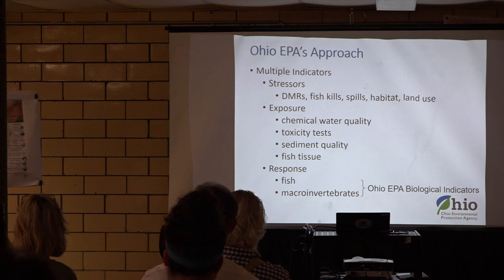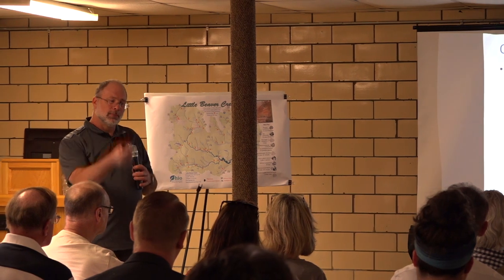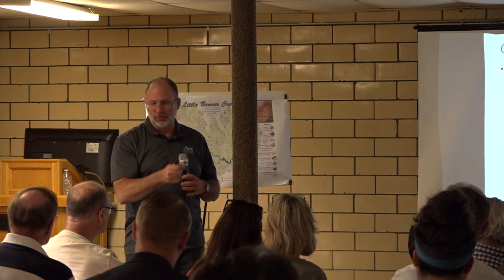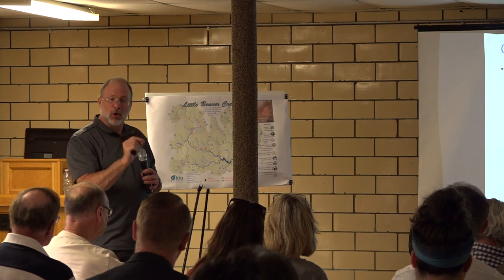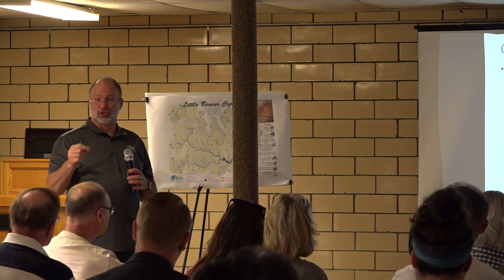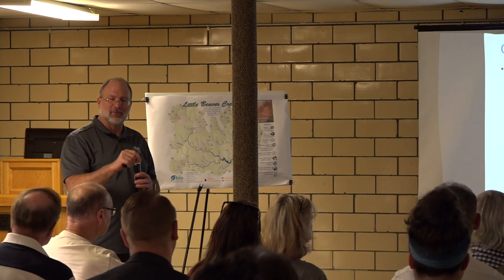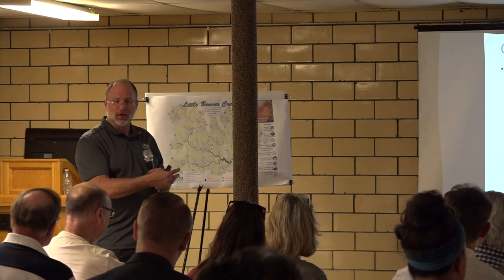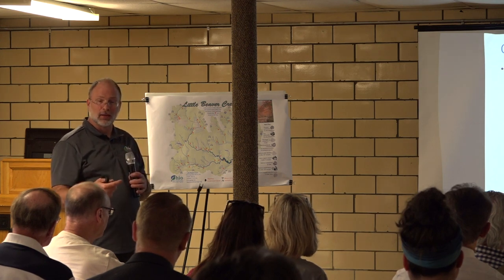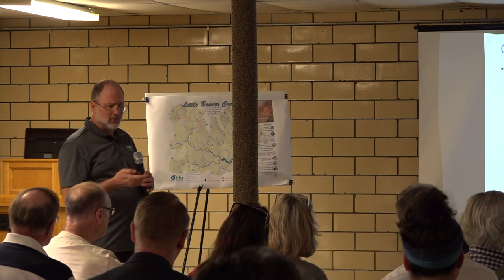A chemistry test is like throwing a bucket off a bridge — you're getting a sample at that very moment. If there's a single event, the chance you're there at that exact moment is very unlikely. But the fish and insects that live in that stream are there their entire lives. So if something is going on, they're going to tell us what's happening. We have a really broad way of looking at a watershed.